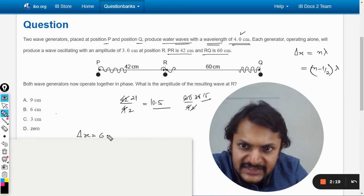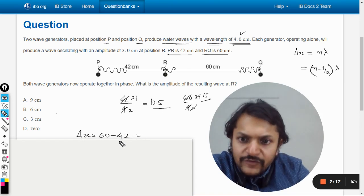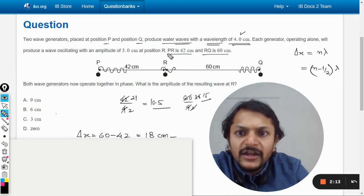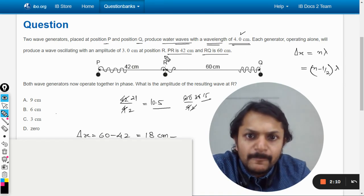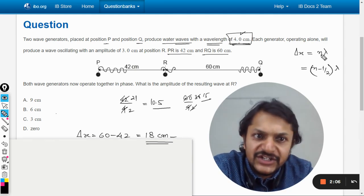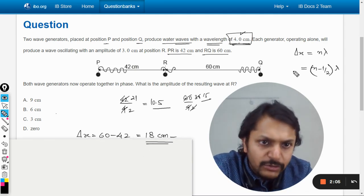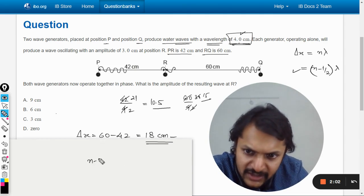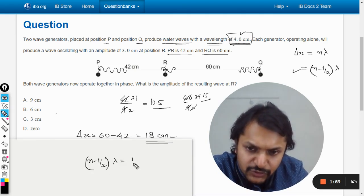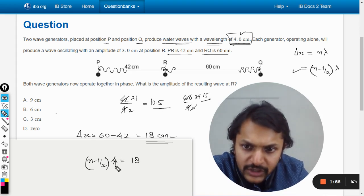Let us see what is the path difference. Path difference is 60 minus 42, which comes out to be 18 centimeters. When we divide it by the wavelength that is 4, it is not an integral part. For destructive interference, (n - 1/2)λ equals 18.